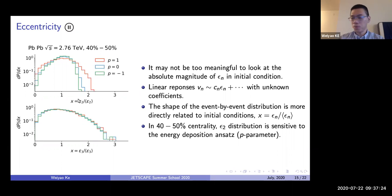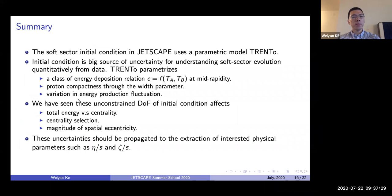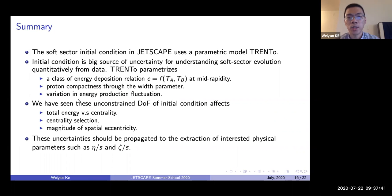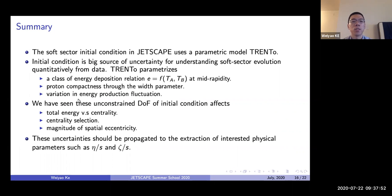Moving to the conclusions summary slides: in summary, Jetscape uses a parametric initial condition model for the soft sector. It also samples the hard production vertices using the binary collision density generated by Trento. For soft modeling of heavy ion collisions, the initial condition is the big source of uncertainty, and Trento parameterizes a class of different energy deposition relations.